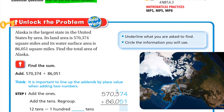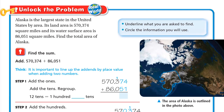Let's unlock the problem. Alaska is the largest state in the United States by area. Its land area is 570,374 square miles and its water surface area is 86,051 square miles. Find the total area of Alaska. We need to find the total area, so we underline what we are asked to find and circle the information we will use. Finding the total area means adding the land area and the water surface area together, so we will add 570,374 plus 86,051.